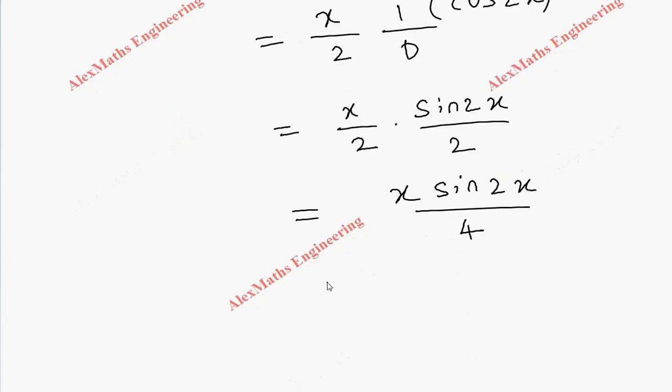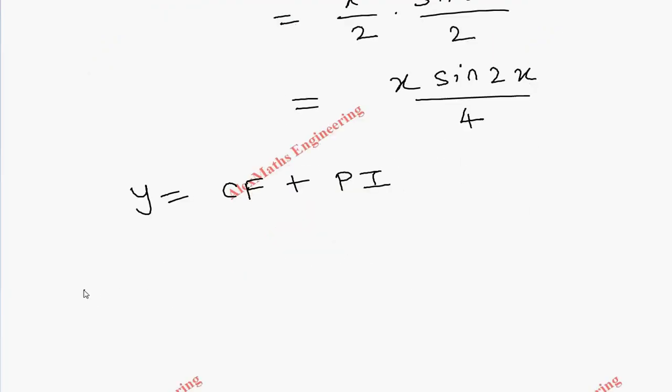Therefore, the complete solution y is CF plus PI. CF is c₁ cos 2x + c₂ sin 2x, along with PI which is x sin 2x by 4.